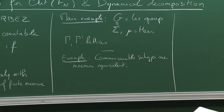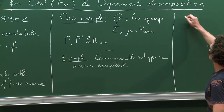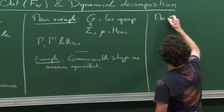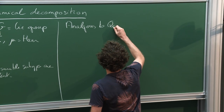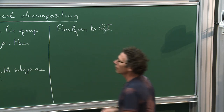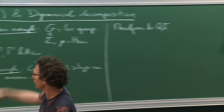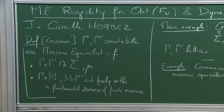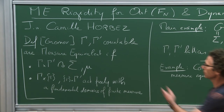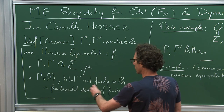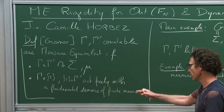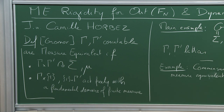In fact, this is often thought of as analogous to quasi-isometry. The reason is: if instead of working in the measurable category you work in the topological category — so if instead you assume this is a locally compact topological space, and instead of having a fundamental domain of finite measure you ask for co-compact actions — then this is a characterization of quasi-isometry. For this reason, measure equivalence is thought of as an analog.